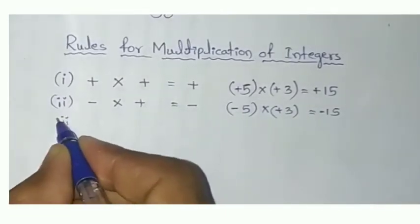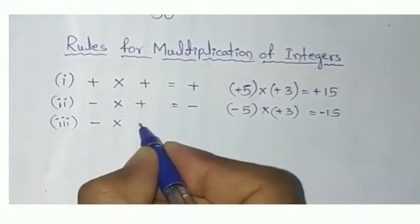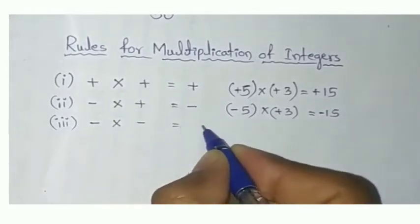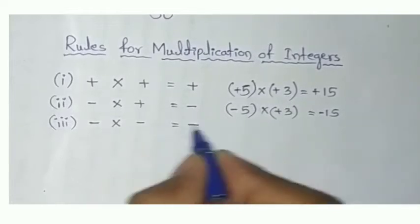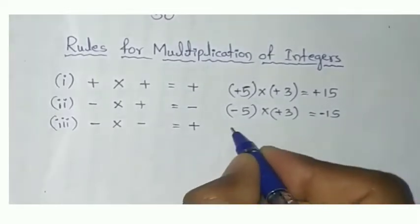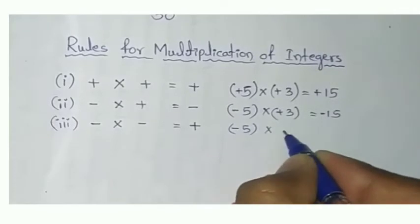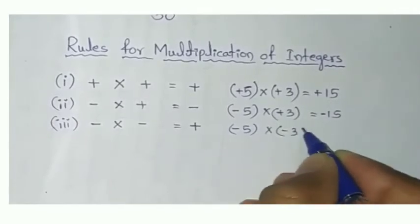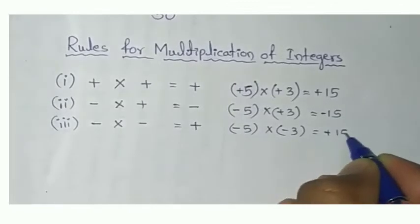Third rule: minus into minus. That will be the same sign, so we will get plus. Same example: minus 5 into minus 3. Here, we will get plus 15.